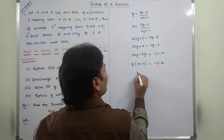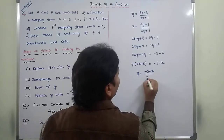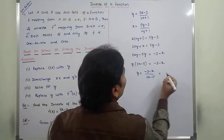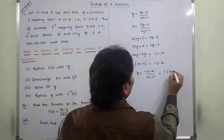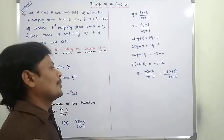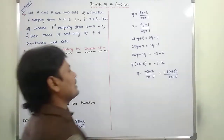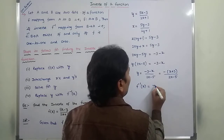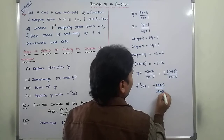So then y is equal to minus 3 minus x divided by 2x minus 5. Now we take minus as common from the numerator, giving us minus of x plus 3, divided by 2x minus 5. So now the last step: after solving for y, replace y with f inverse of x. Therefore, f inverse of x is equal to minus of x plus 3 divided by 2x minus 5.